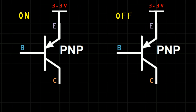We've already stated that the base must be set low, that is, to 0 volts to switch the transistor on. Likewise, when the base is set high to 3.3 volts, the transistor is switched off.